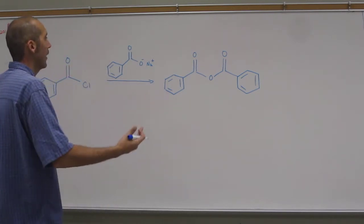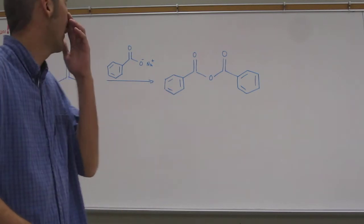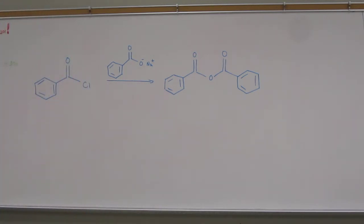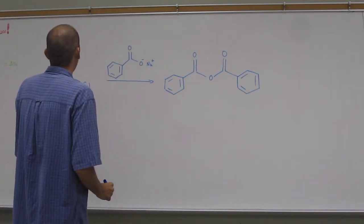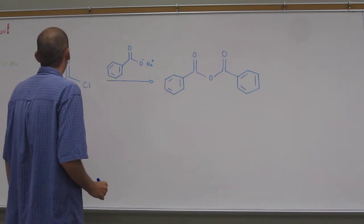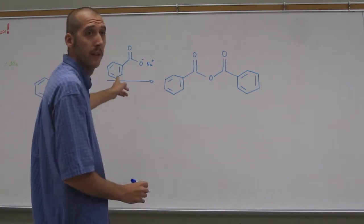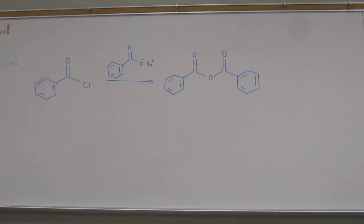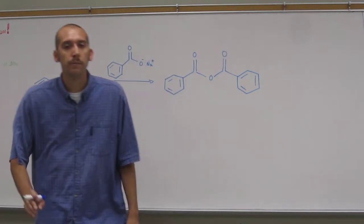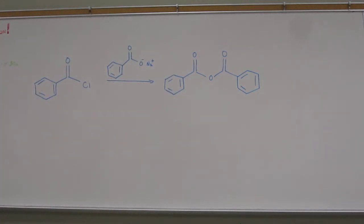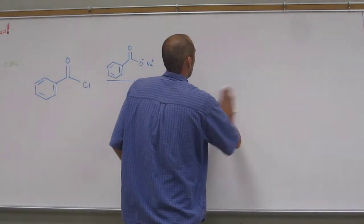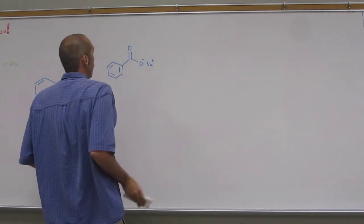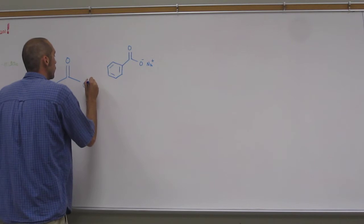Okay, so in this case, let's introduce the problem. What do we got here? We're going to take an acid chloride and make an anhydride out of it. And we're going to take that acid chloride and react it with sodium benzoyl. You like that? The acid chloride to an anhydride.